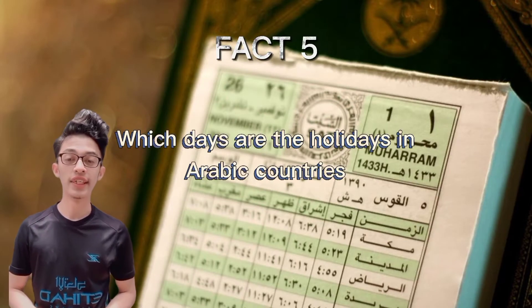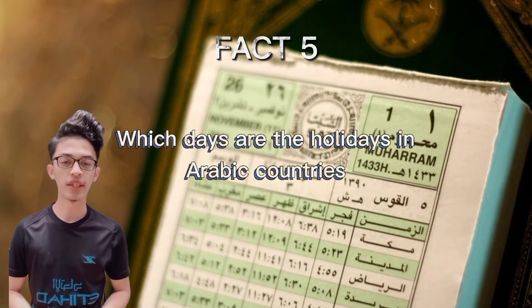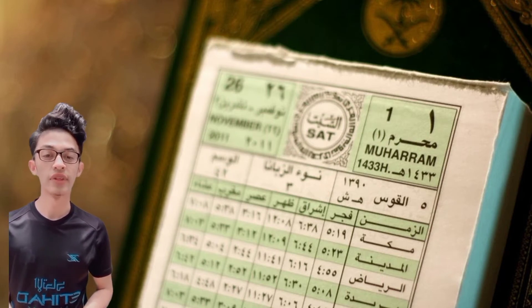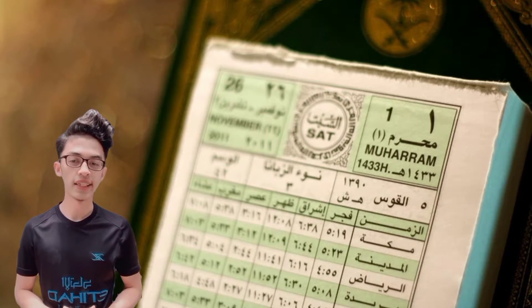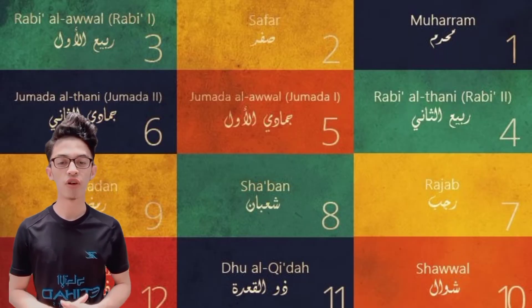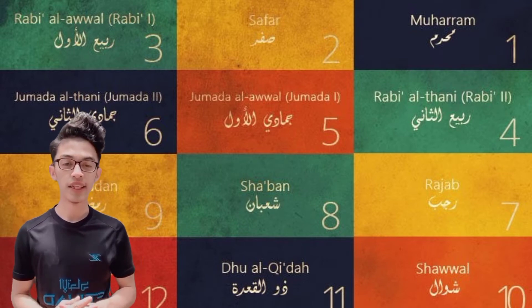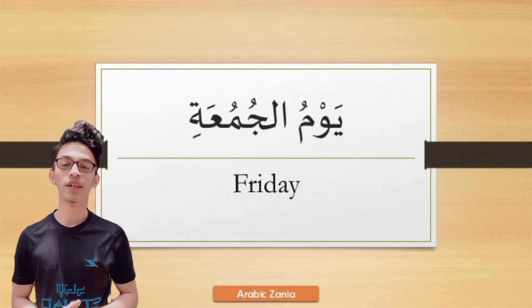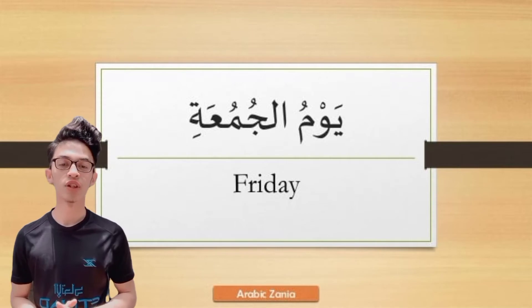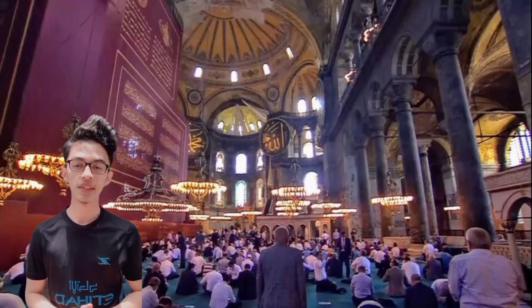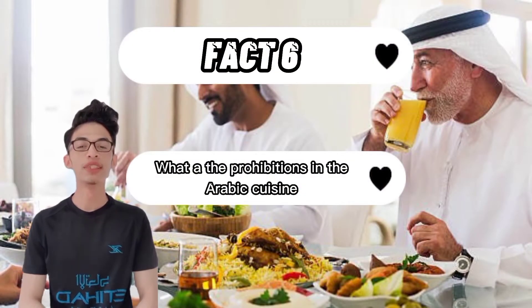The fifth fact: which days are the holidays in Arabic countries? Life and holidays are under the influence of Islam in Arabic countries. The Arabic calendar is a lunar calendar in which one year consists of 12 months and 353 or 354 days. The holiday for Muslims is Friday. Although holidays of Arabic countries vary across countries, the common holidays are of course religious fasts and special days. These dates change each year since they use the lunar calendar.